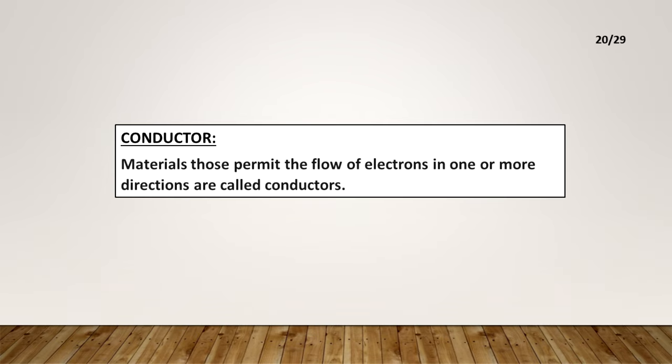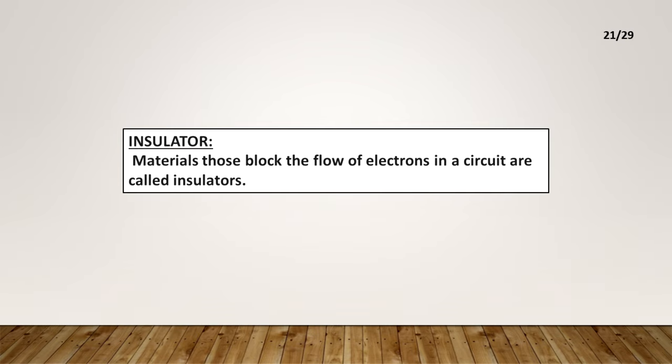Conductor: Materials that permit the flow of electrons in one or more directions are called conductors. Insulator: Materials that block the flow of electrons in a circuit are called insulators.